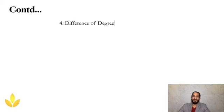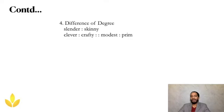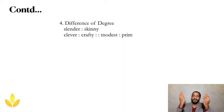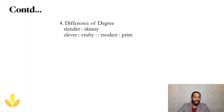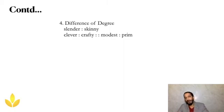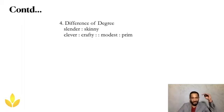Difference of degree — comparing a thing to a better version of itself, like an iPhone 5 versus an iPhone 6. Slender is thin, but skinny is thinner. Similarly, clever is to crafty as modest is to prim. You might be clever, but if you are crafty you are much smarter because you can think and get it done at the same time. A prim personality is someone with the highest level of modesty. Note: slender to skinny goes on a downward scale, while clever to crafty goes upward.